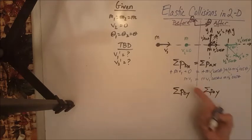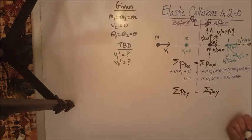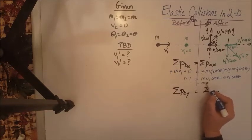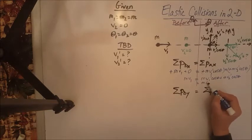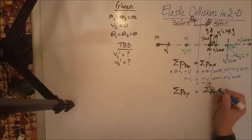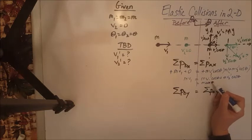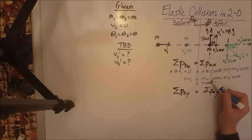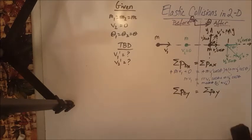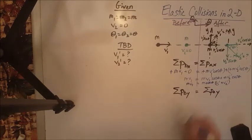And then we can actually simplify this equation further by factoring out the mass on the right-hand side, the mass and the cosine theta really. So let's do that. Factor out mass times cosine theta here. And what we have left is V1 prime plus V2 prime. And here we just have the same MV1.